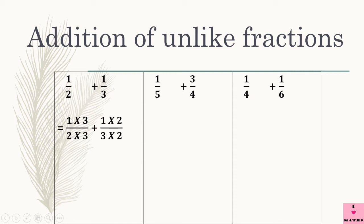See, 1 multiplied by 3 and 2 multiplied by 3. In equivalent fractions, we have already studied that if you multiply the numerator and the denominator of a fraction by the same number, the new fraction which comes is equal to the original fraction. And now 1 upon 3 — we are multiplying the numerator by 2 and the denominator also by 2. Why am I multiplying 1 upon 2 by 3? Because the denominator of the second fraction is 3. And why am I multiplying 1 upon 3 by 2? Because the denominator of the first fraction is 2.